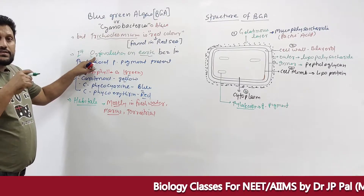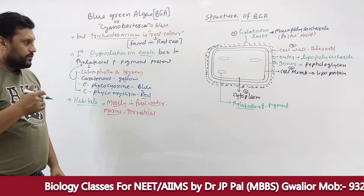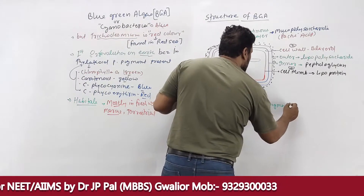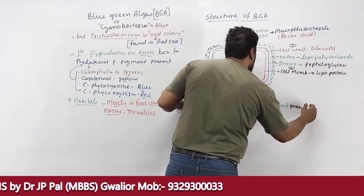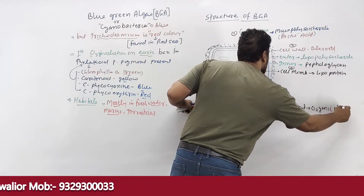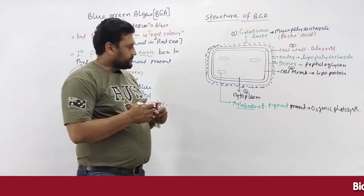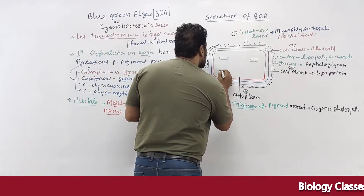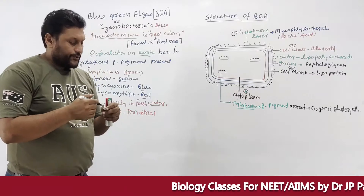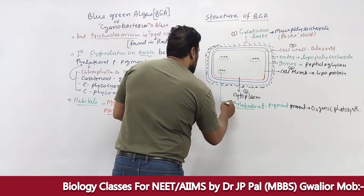The thylakoid contains photosynthetic pigments and carries out oxygenic photosynthesis. This is the first structure found inside the cytoplasm of BGA. The second part is inclusion bodies, which serve as food storage.